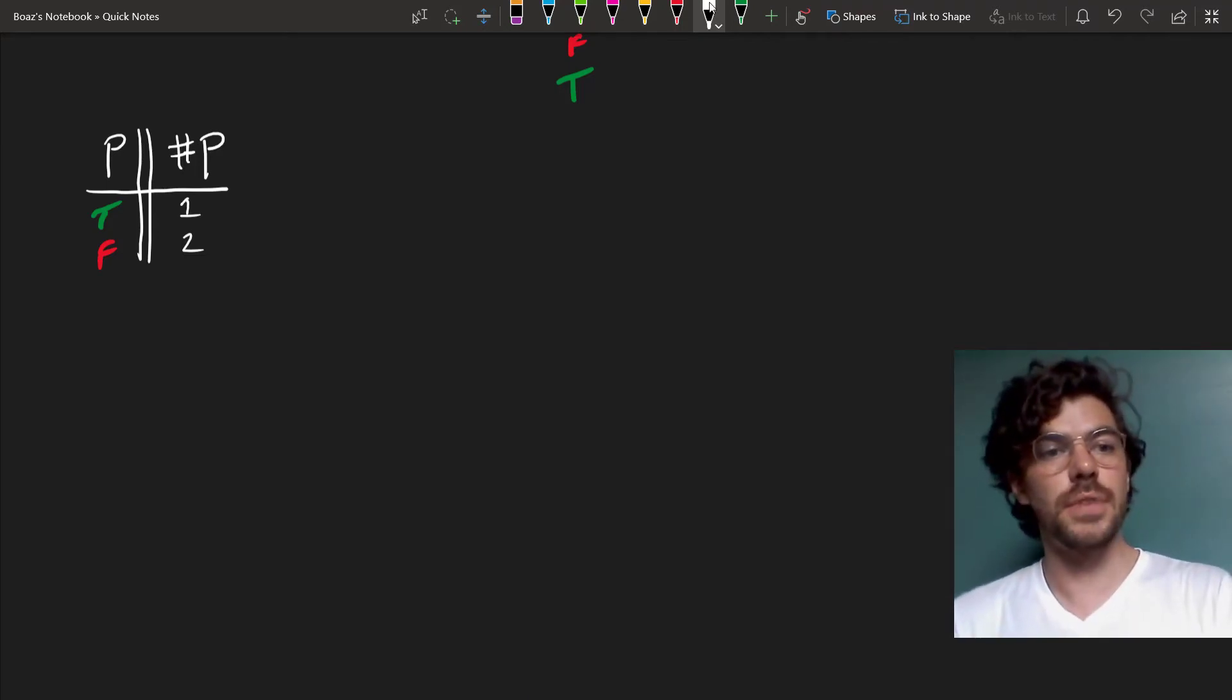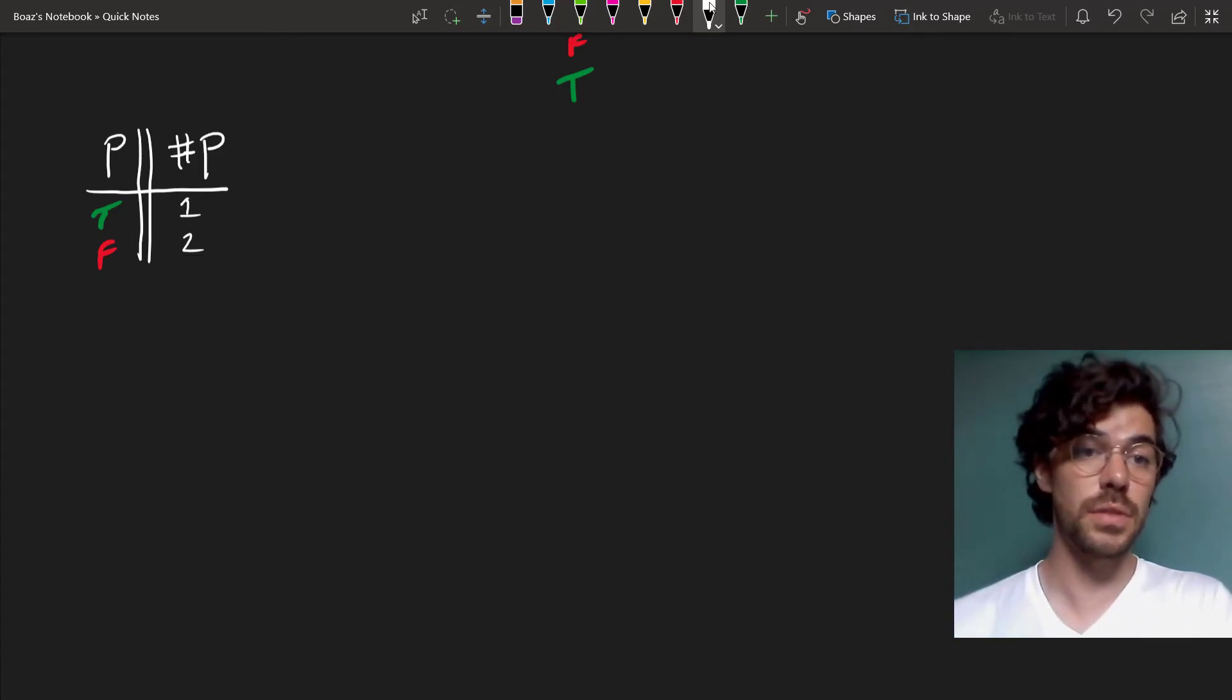On the other hand, if we want value 1 to be false and value 2 to be true, then hashtag P is just equivalent with NOT P.